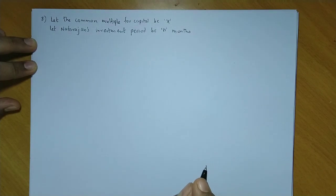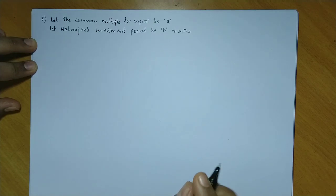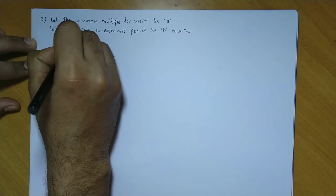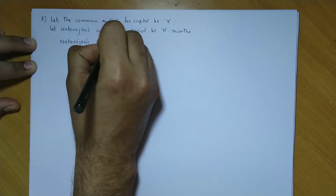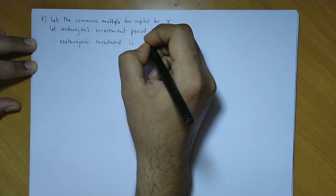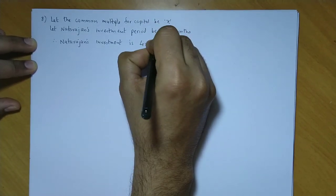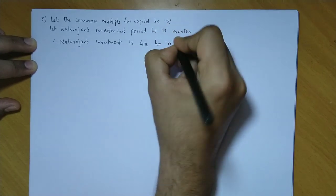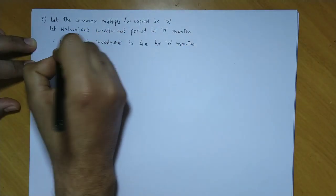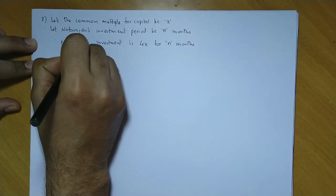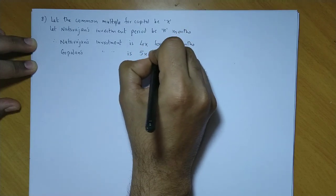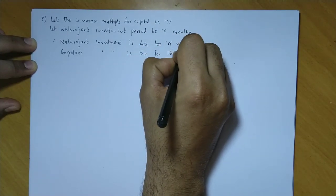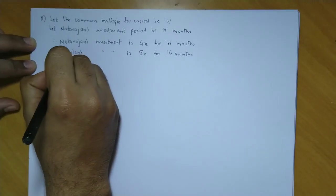Natarajan and Gopalan's capital ratio is 4:5. Gopalan has invested for 16 months. Therefore, Natarajan's investment is 4x — since his duration is not given, we assume n months — so 4x for n months. And Gopalan's investment is 5x for 16 months, as 16 months is given in the data.